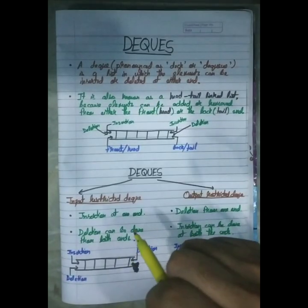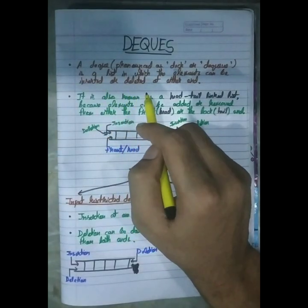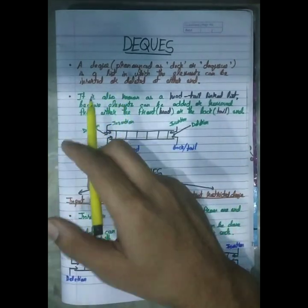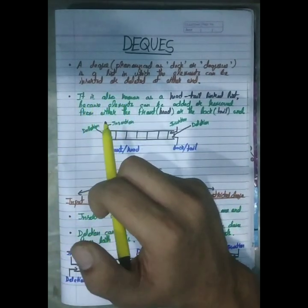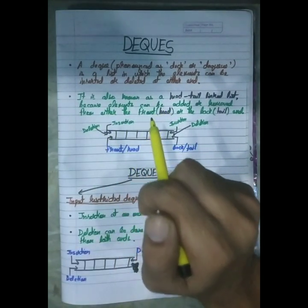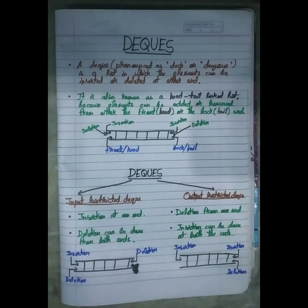Basically, what is a DQ? DQ is pronounced as DEC or DQ. It is actually a list — a list in which the elements can be inserted or deleted at either end. This means DQ is basically a list where you have insertion and deletion at both ends — the starting end and the last end. Both ends can have insertion and deletion.